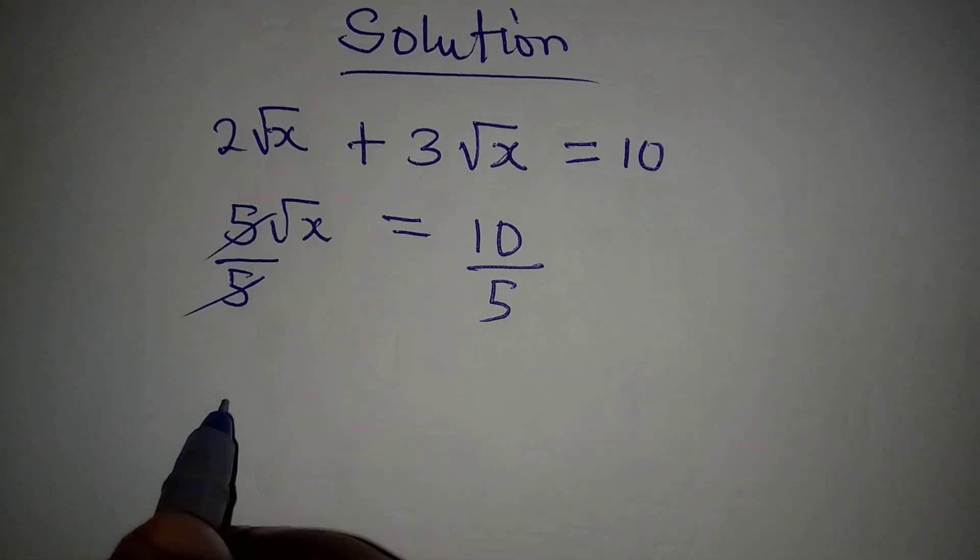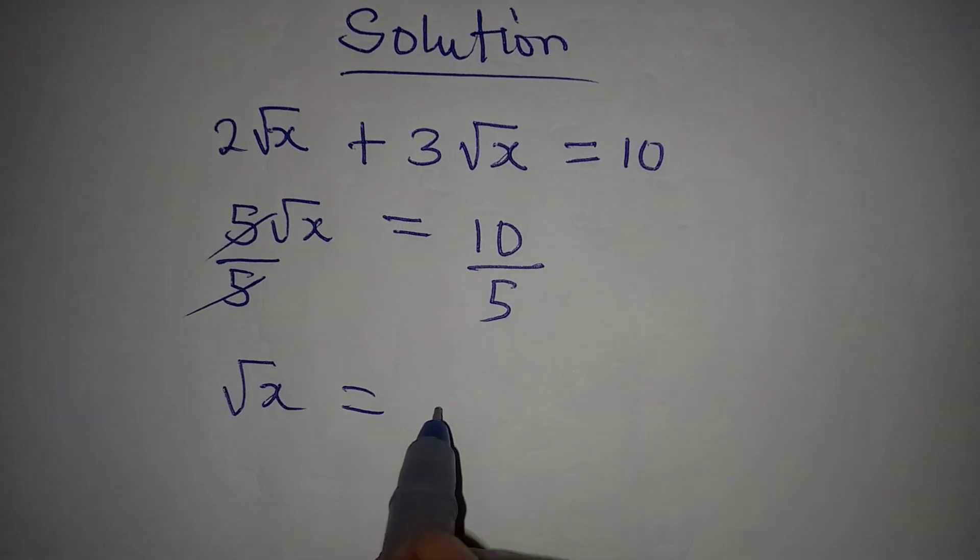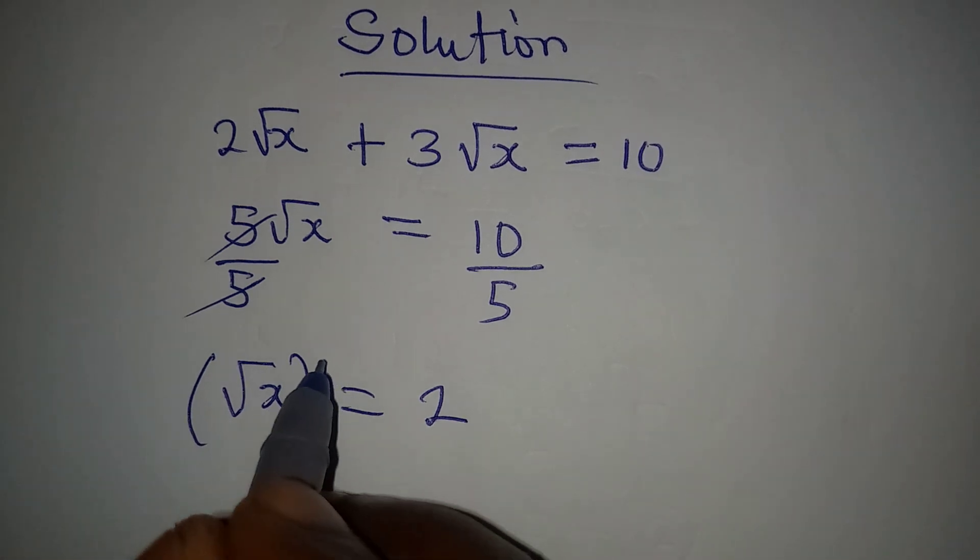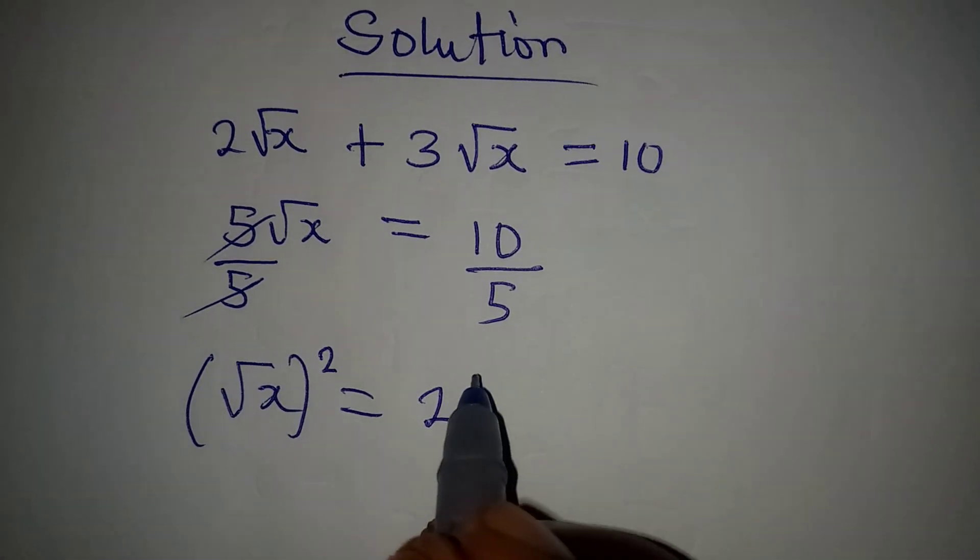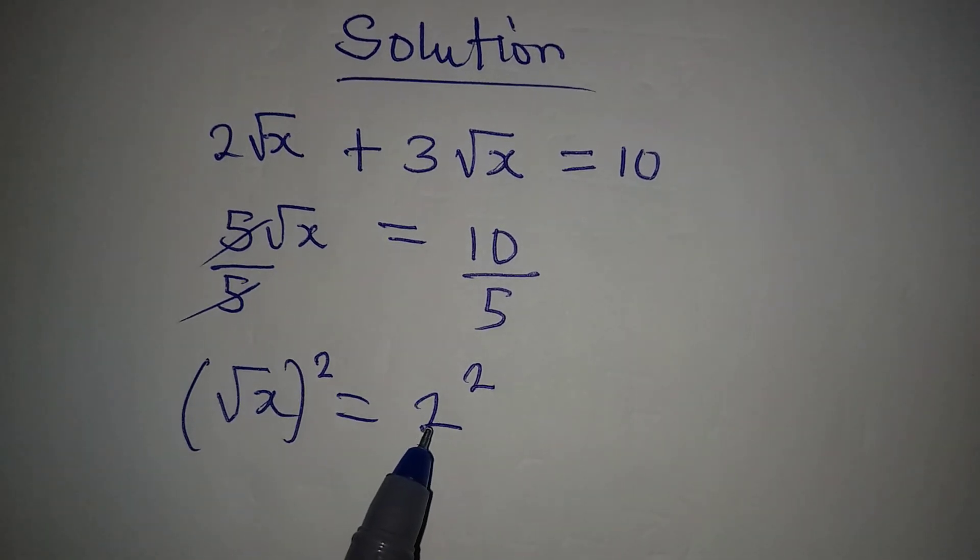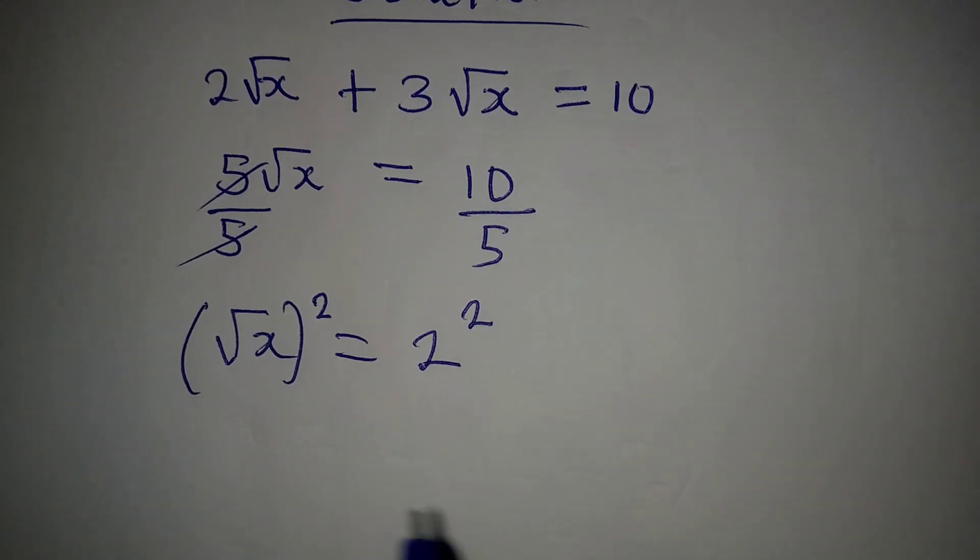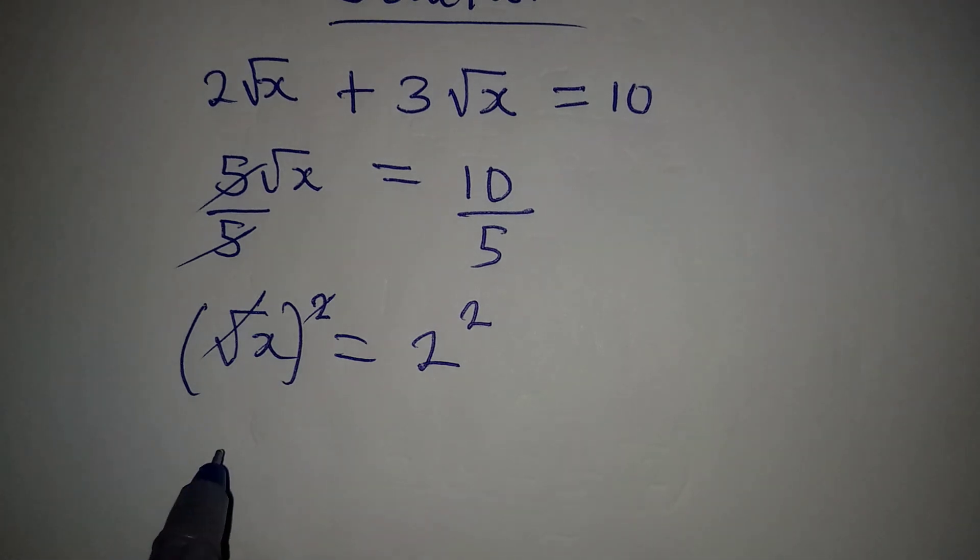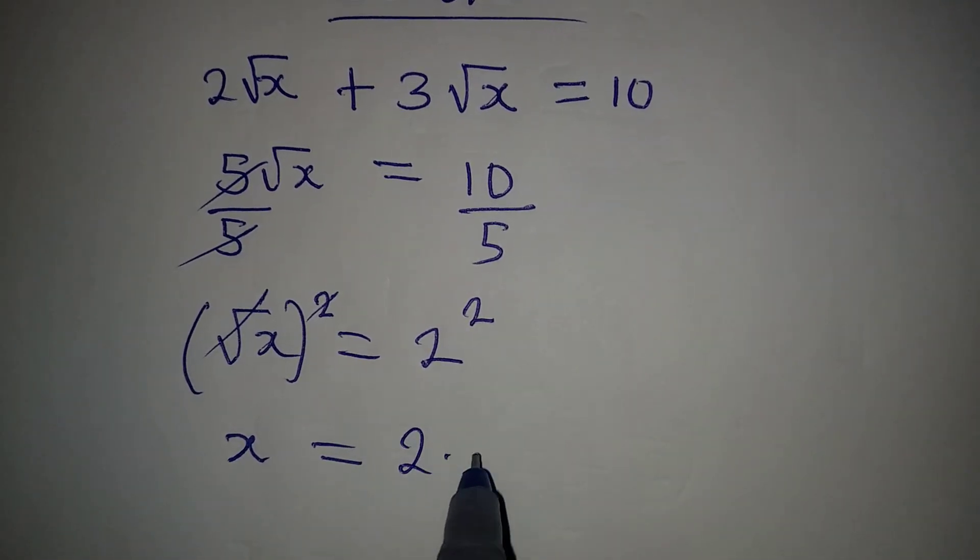Okay, simple right? Then to remove this square root, you have to square this. And since you square the left hand side, you would have to square the right hand side. Now this and this will be gone, and then x will be equal to 2 times 2. Now x is 4.